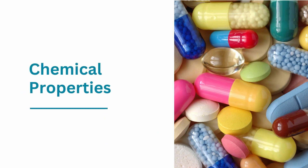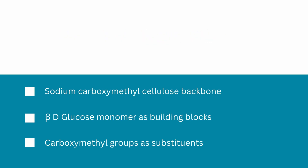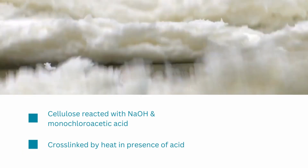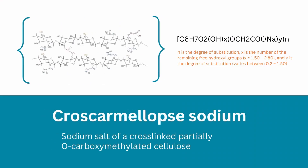Let me briefly touch on the chemical structure and a few other important points. This will help us understand the fundamental differences between croscarmellose sodium and comparable cellulose derivatives. The basic backbone of croscarmellose sodium is sodium carboxymethylcellulose, a polymer made up of beta-D-glucose units whose free hydroxyl groups are partially substituted by carboxymethyl groups. Carboxymethylcellulose sodium is obtained by reacting cellulose from specific wood sources with sodium hydroxide, followed by treatment with monochloroacetic acid.